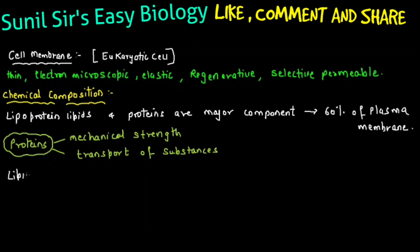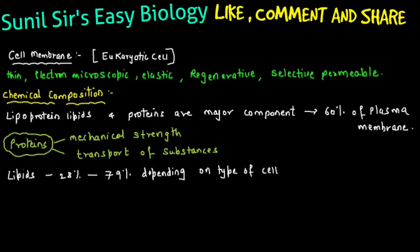Next, when we talk about lipids in a cell membrane, how much lipid is present? We say 28% to 79%. But the percentage of lipids is going to vary depending on the type of cell. For example, in humans the myelin sheath has more amount of lipid — 79% lipids are found in the myelin.